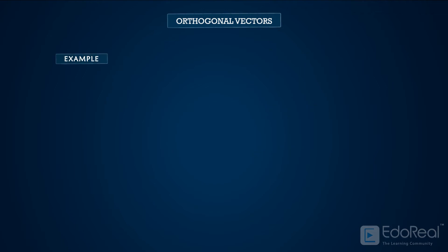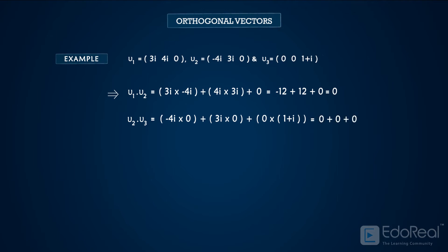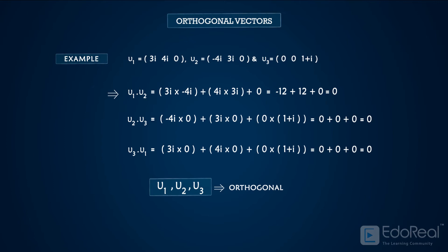Let us see another example. Find if the vectors U1, U2, and U3 are orthogonal vectors or not. Find the dot product of U1 and U2 by multiplying the corresponding elements and adding the products — we get zero. Similarly, the dot product of U2 and U3 is zero, and the dot product of U3 and U1 is also zero. By observing all three dot products, we can say that all three given vectors are orthogonal to each other.